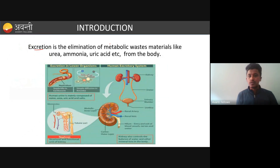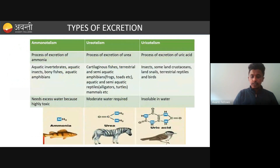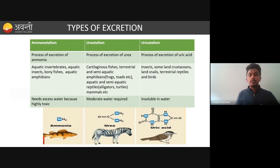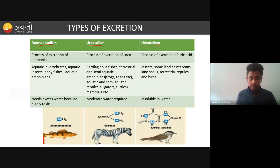Excretion is a process of elimination of metabolic waste — it can be urea, ammonia, uric acid, carbon dioxide, and many ions like potassium, sodium, etc. Excretion is a very novel design in all organisms, and its complexity changes from lower to higher organisms. We can divide all animals into three important types: ammonotelic, ureotelic, and uricotelic — also called ammonotelism, ureotelism, and uricotelism.